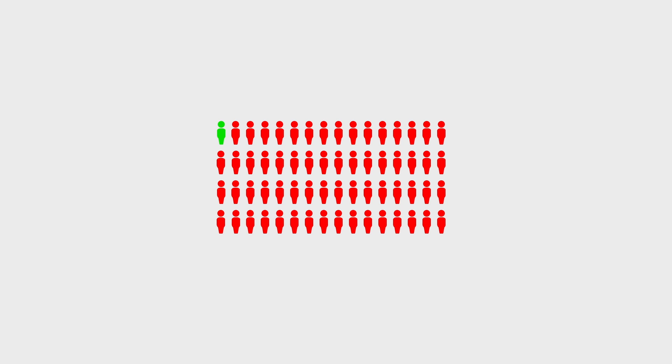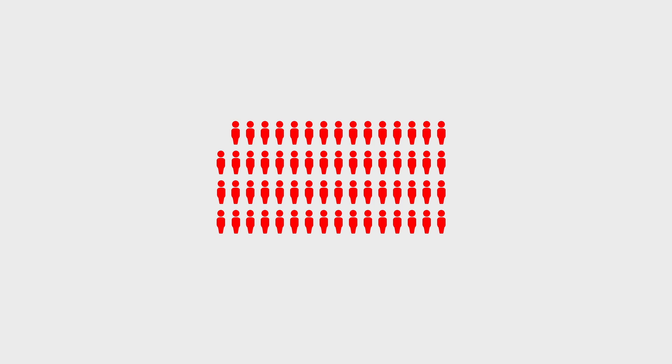But there is a more clever solution that does not require any addition. At the end of the tournament, there is one winner and 63 losers. A player can lose only once because once they lose, they're out. Since each match produces one loser, and by the end of the tournament there are 63 losers, 63 matches were played.